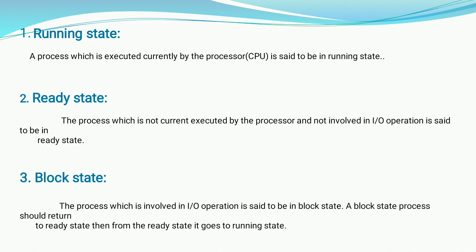Suppose the process gets executed in the CPU. At that time, if it needs any IO operation — that is, if it is involved in any IO operation — the particular process can be moved from the running state to the blocked state. Then, after completion of the IO operation, the specific process will move from the blocked state to the running state. Processes ready to run can be moved only from the ready state to the running state.